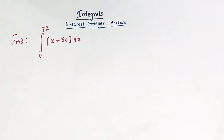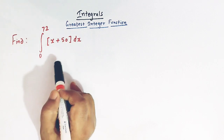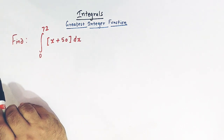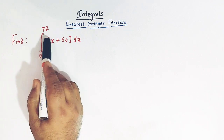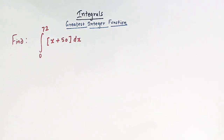Hello viewers! In today's class we are going to discuss a very important problem from definite integrals involving greatest integer function. We are going to solve this problem in which we have to find the value of this integral in which the integrand is greatest integer function. So we have to find the integral from 0 to 72, where the integrand is greatest integer of x plus 50. This problem is very important for beginners.